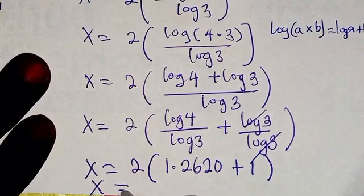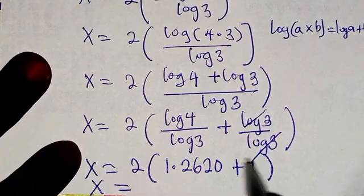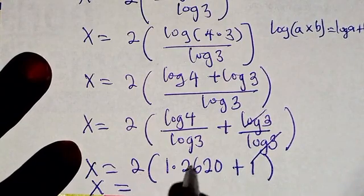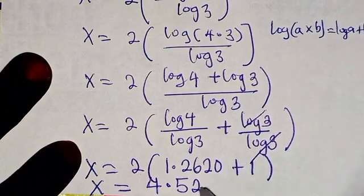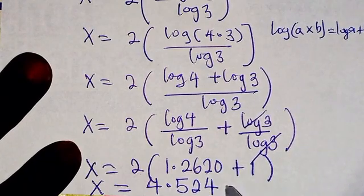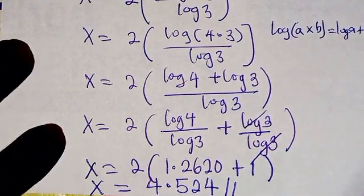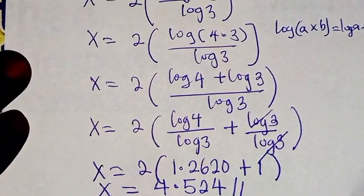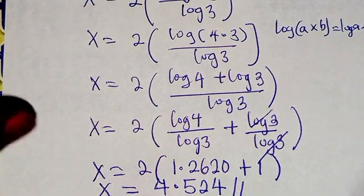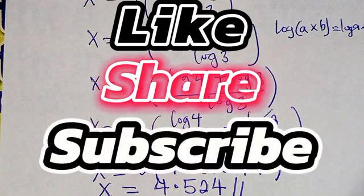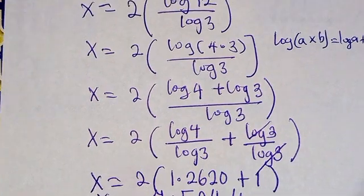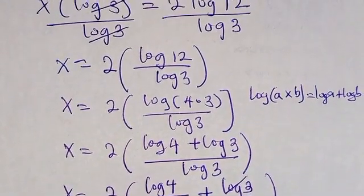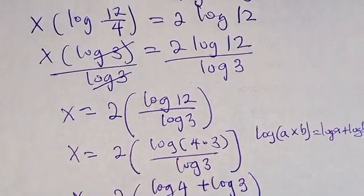Multiplying through by 2, we get x equals 2 times (1.2620 plus 1), giving x approximately equal to 4.524. That is the end of the class. If you find the class very interesting, do not hesitate to subscribe to our YouTube channel and hit the bell icon so that you'll be notified any time there is new content. Thank you so much for watching, bye.